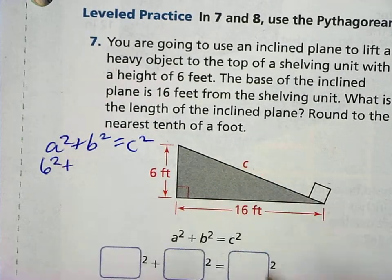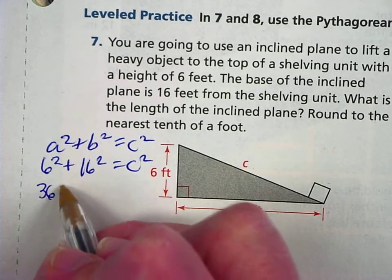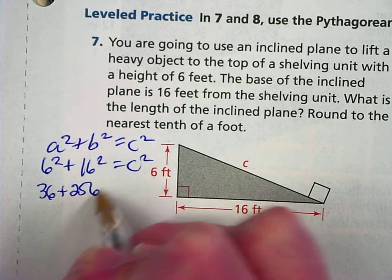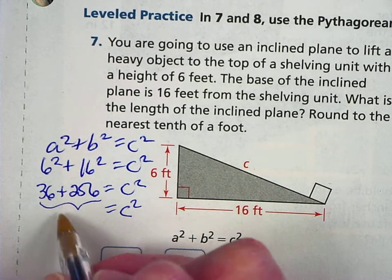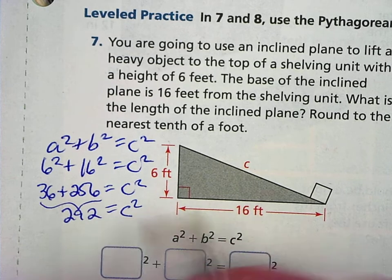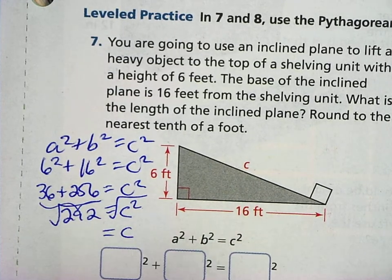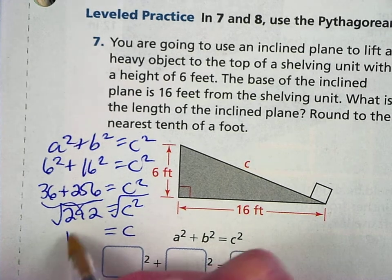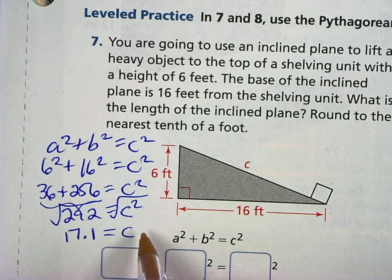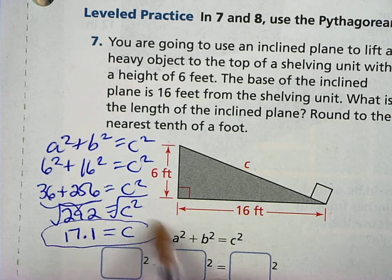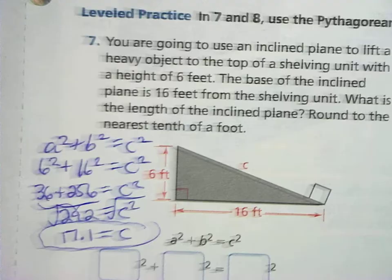So 6 squared plus 16 squared equals C squared. 6 times 6 is 36. 16 times 16 is 256. Because these are on the same side, we're going to add these two together. So 292. And then I want to find the square root. The square root of C squared is C. And the square root of this, make sure you are rounding correctly. This says to the 10th place. 292 is not a perfect square, so you're going to get a decimal. The length of this has to be 17.1 feet.